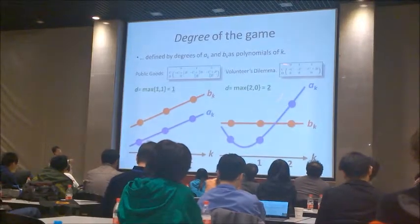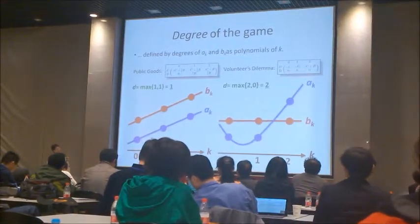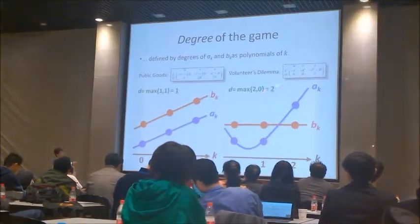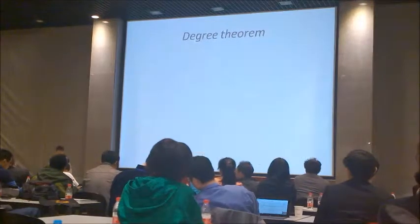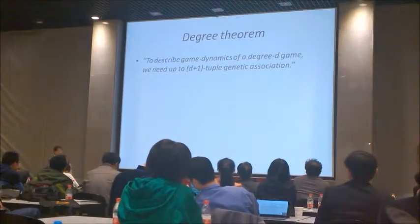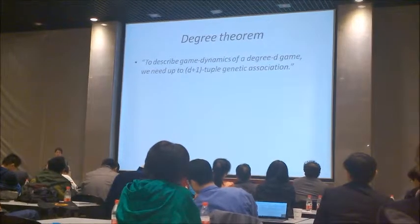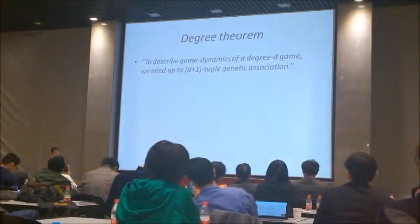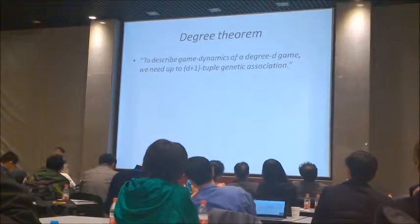This game has higher nonlinearity than that. And this degree, defined as the maximum degree of the polynomial, is actually responsible for how high-order genetic association we need. We can formally prove that the degree D game requires D plus 1 order genetic association.